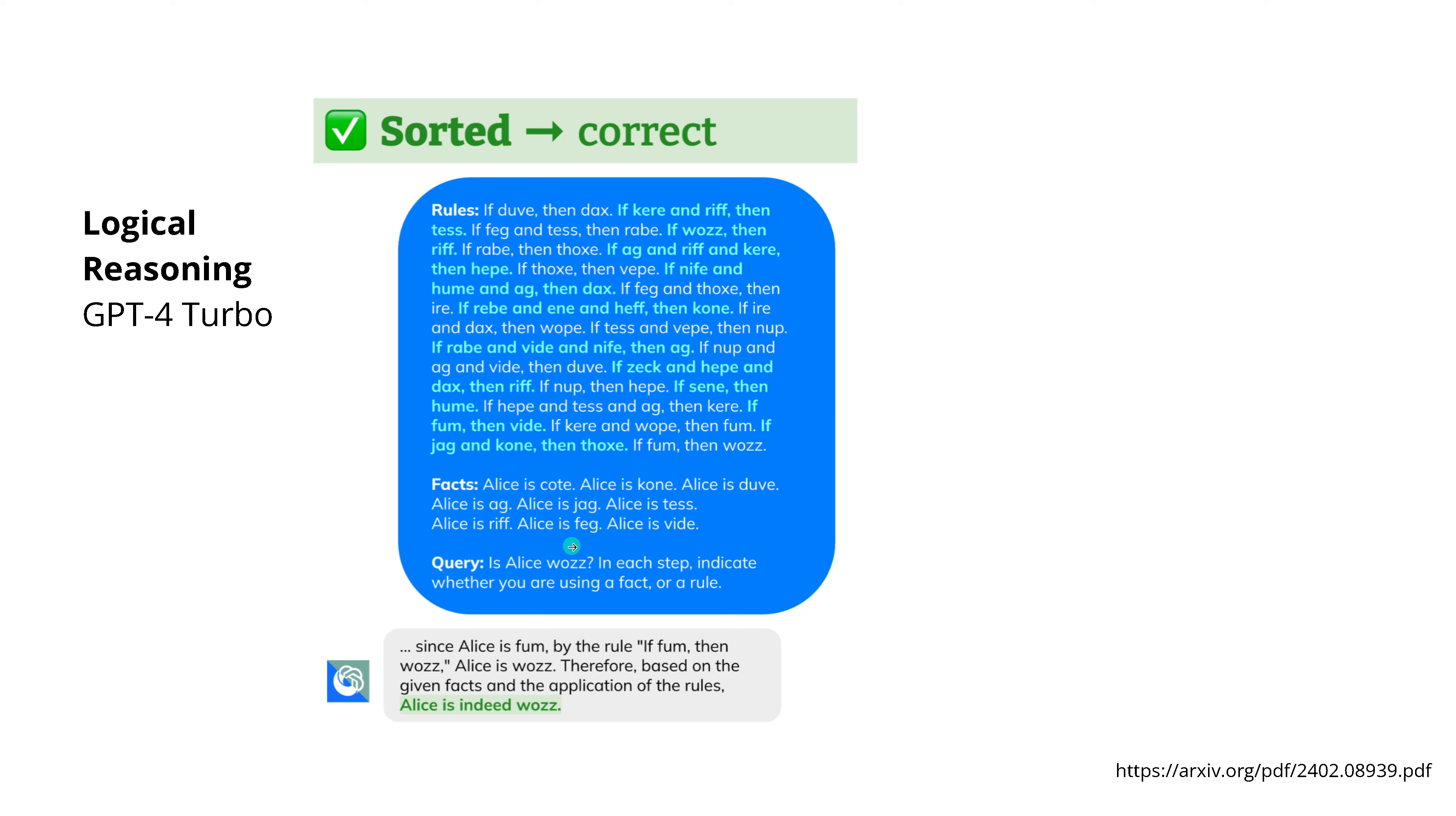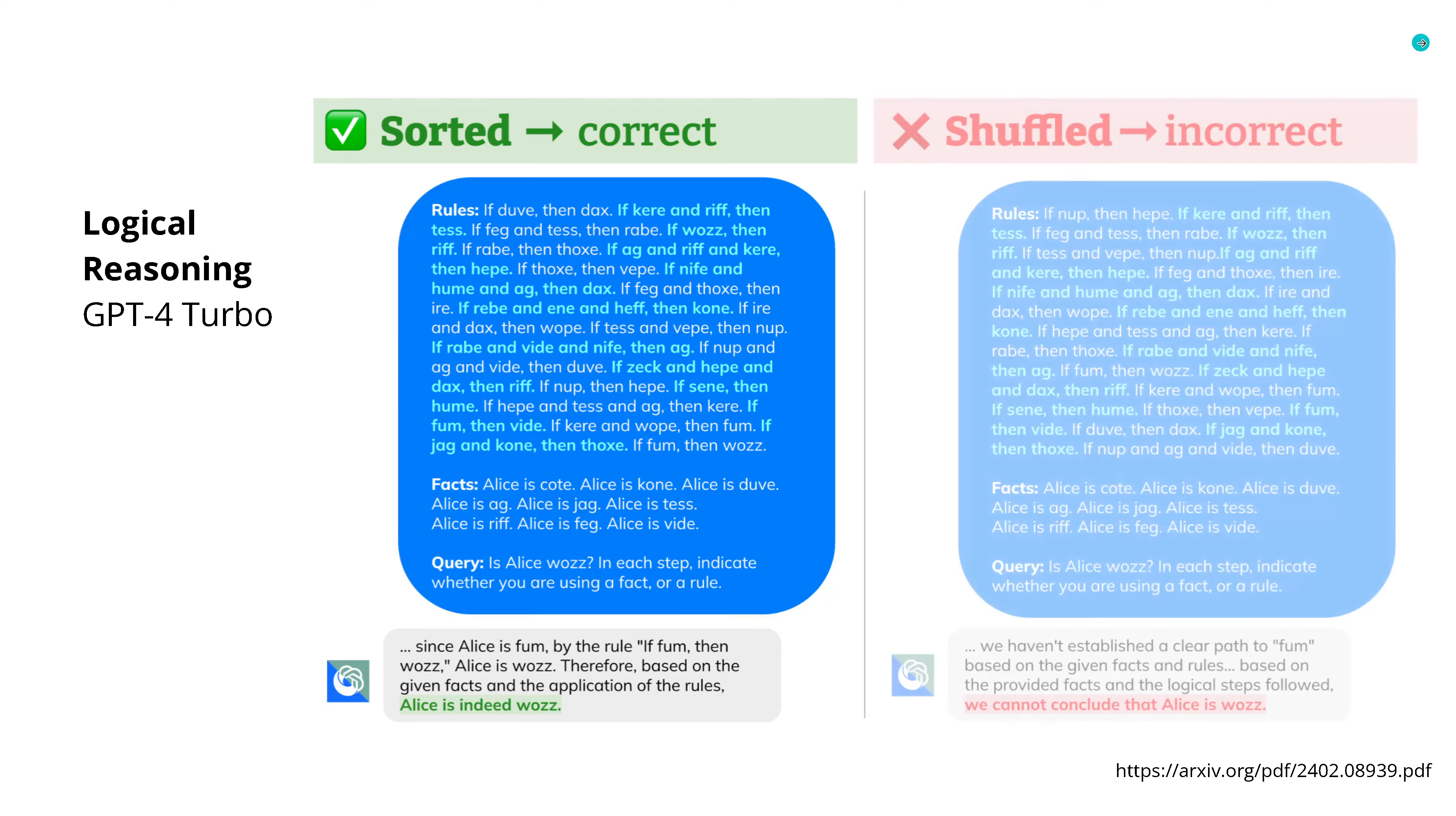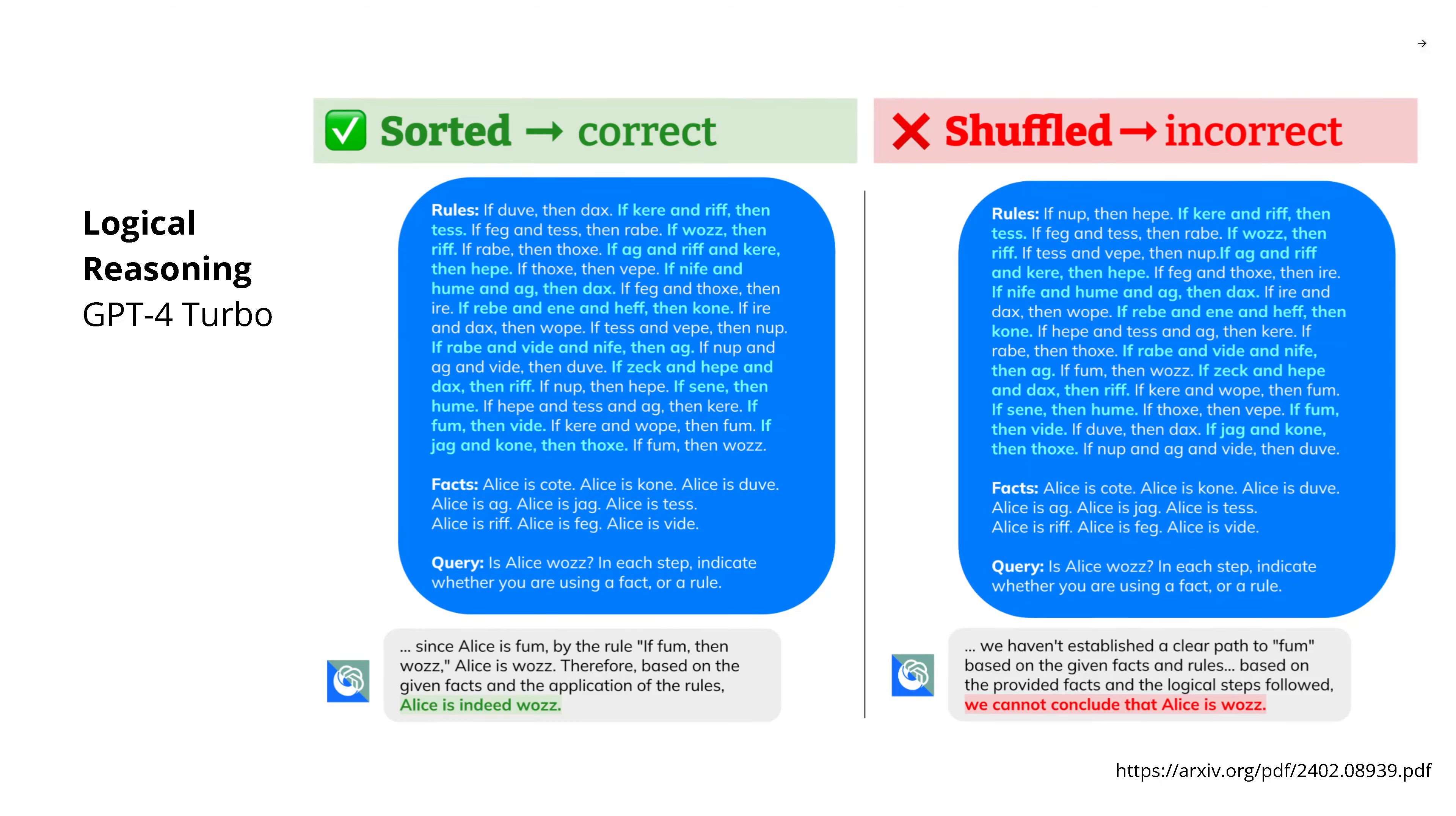And GPT-4 Turbo, our darling, the best system we have says yeah, correct solution. So given here the rules, and you go through the rules, it finds the correct solution. But guess what? If you shuffle it just a tiny little bit, GPT-4 Turbo fails completely. It gives you the exact opposite answer. How is this possible?